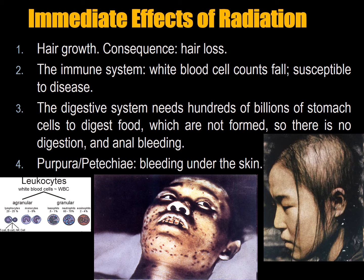The digestive system needs hundreds of billions of stomach cells to digest food — these are not formed under radiation exposure, so there's no digestion. Food goes right through you; the intestine has difficulty extracting nutrients and you suffer anal bleeding — actually the matter of the stomach lining that comes out. You also have about one to two pounds of microbes in your stomach that help digestion. These living bugs stop reproducing under radiation, further impairing your ability to digest.